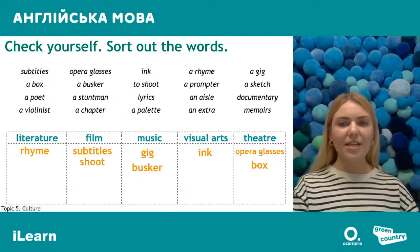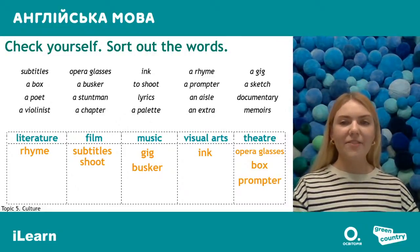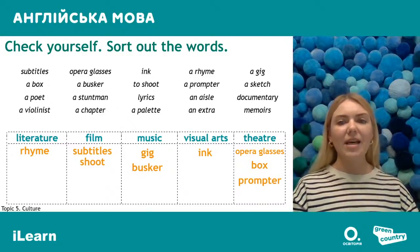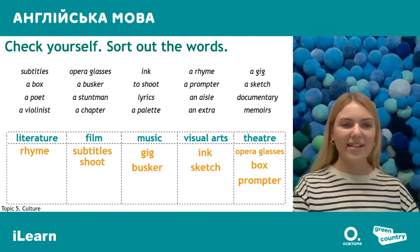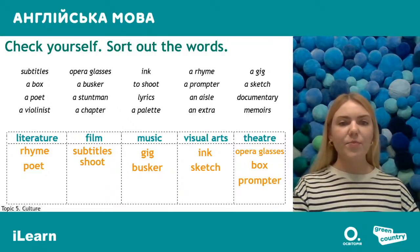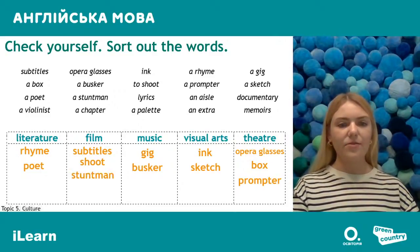'Prompter' — суфлер — is a person who helps actors when they forget the text they need to say, and usually there is a prompter in the theater. 'Sketch' is a short, very quick picture or painting made very quickly — набросок — and it's about visual arts. 'Poet' goes to literature. 'Stuntman' — каскадер — is a person who does dangerous tricks when people are shooting a film. That's about films.